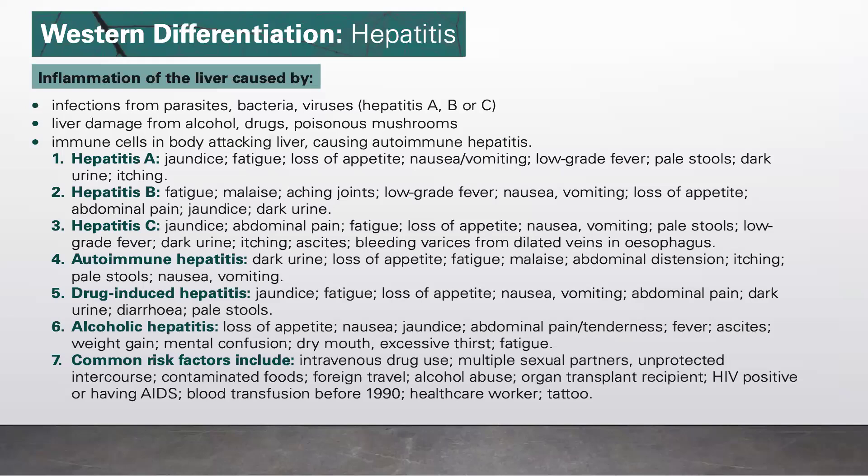Hepatitis C will present with jaundice, abdominal pain, fatigue, loss of appetite, nausea, vomiting, pale stools, low-grade fever, dark urine, itching, ascites, and bleeding varices from dilated veins in the esophagus.